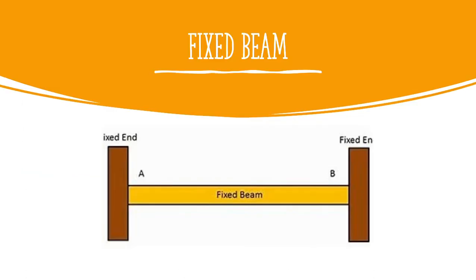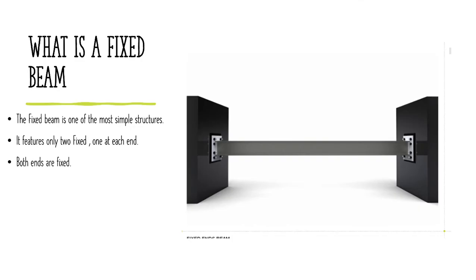Let us now go through the fixed beam. A fixed beam is a beam where the two ends are fixed — they are rigidly fixed and do not move on both sides. A fixed beam is also one of the most simplest structures among all the beams.